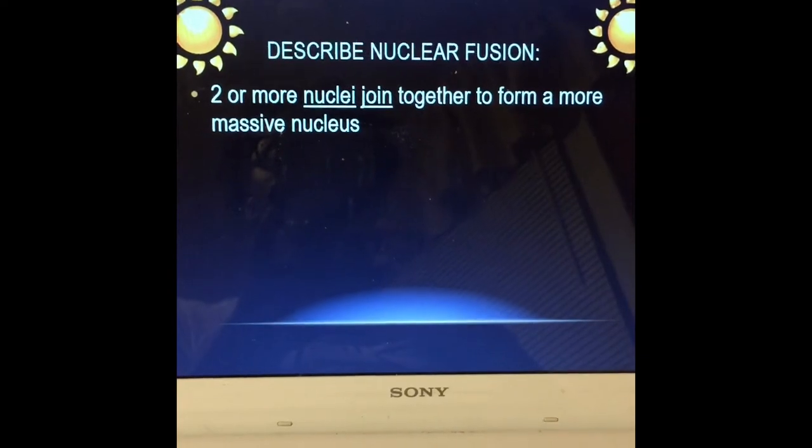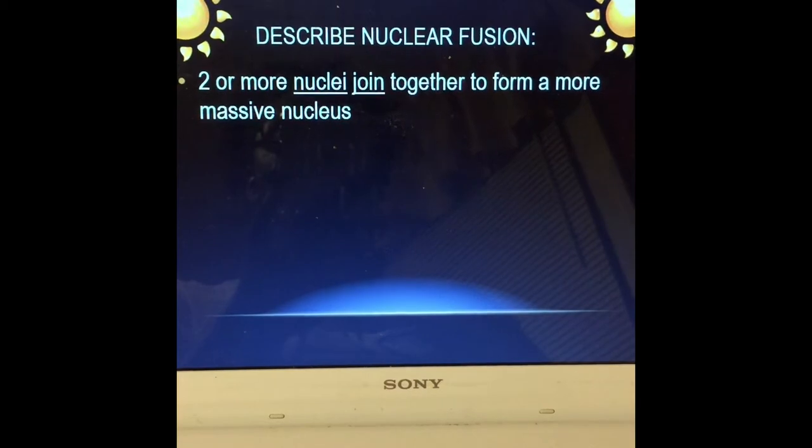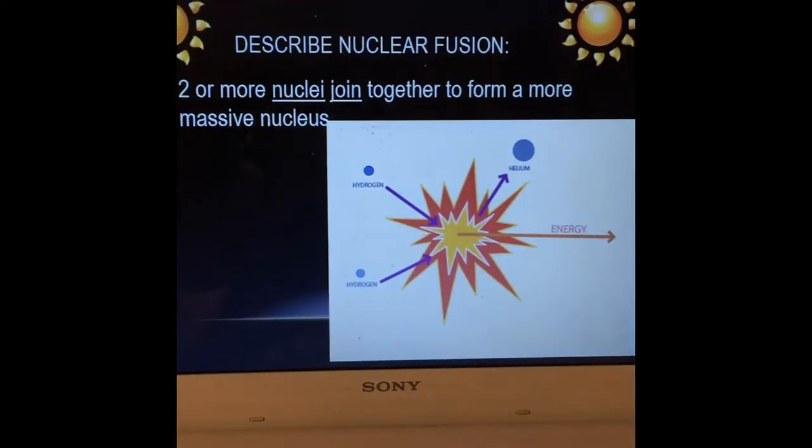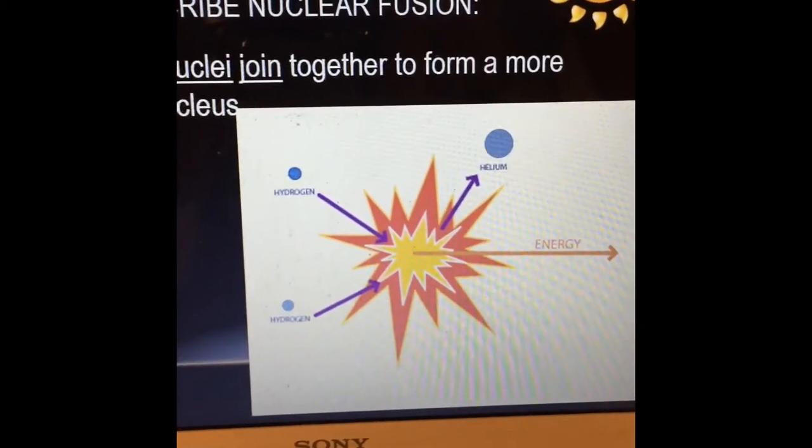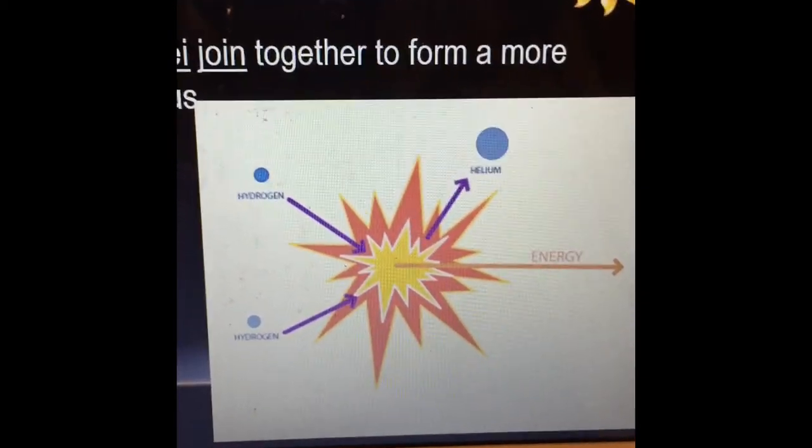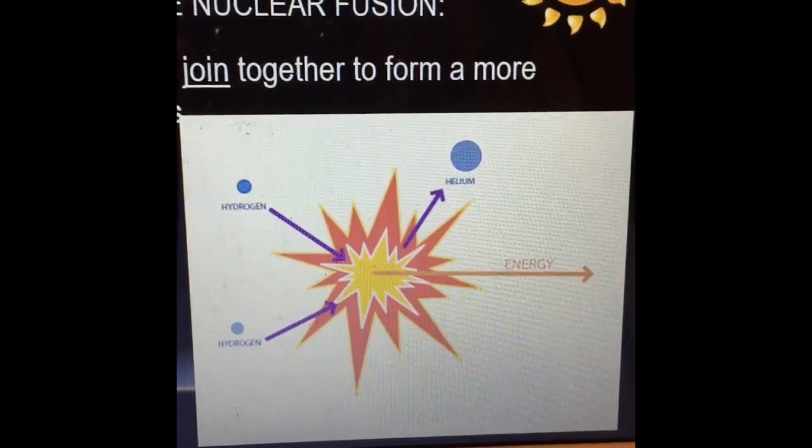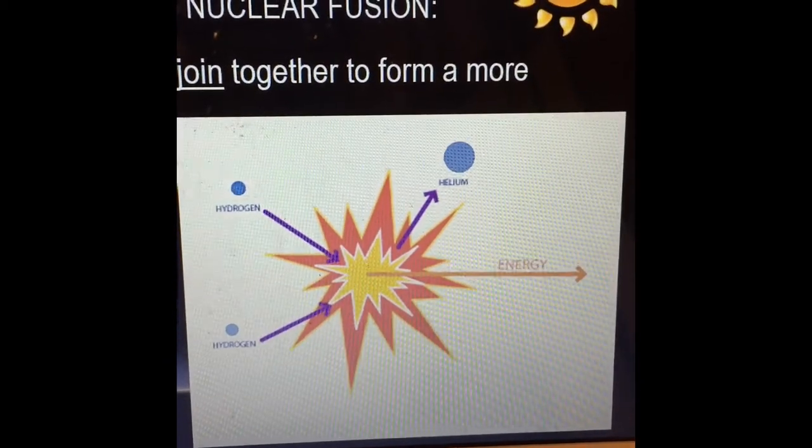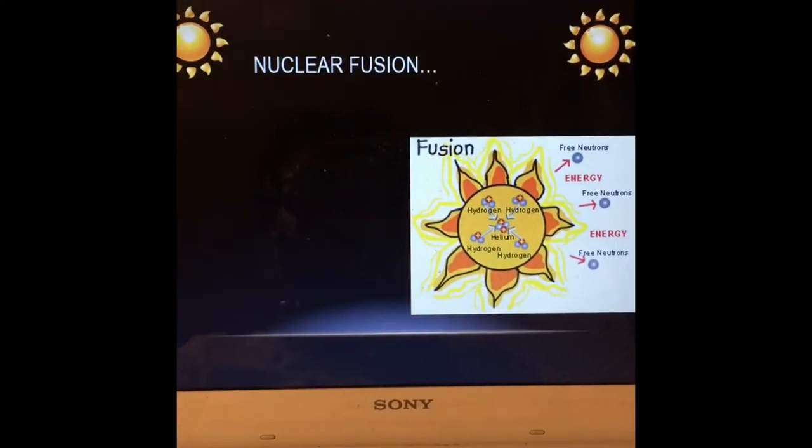Nuclear fusion is when two or more nuclei, which is the plural of nucleus, join together to form a more massive nucleus. That is what happens when a hydrogen and a hydrogen come together - they form a helium. What happens is it produces an enormous amount of energy.